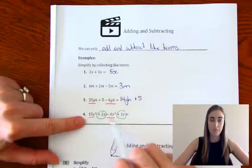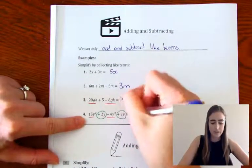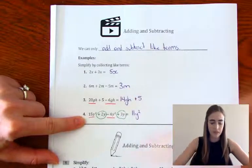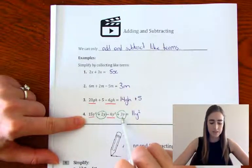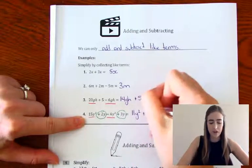So we'll go 15y squared minus 4y squared. That would give us 11y squared. And then the 2y plus 3y would give us plus 5y.